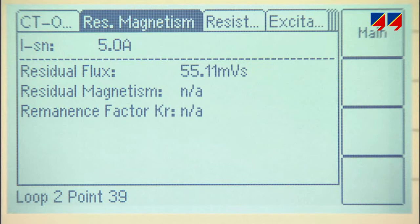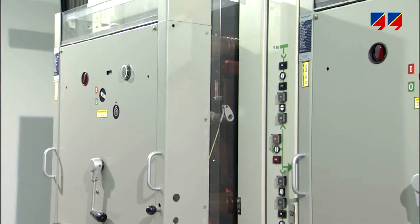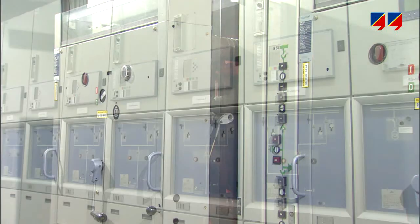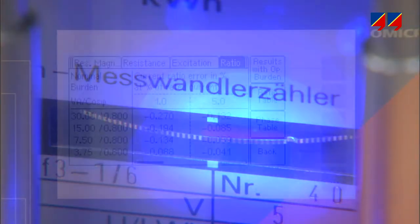Its remalizer function measures a CT core's magnetic remnants, helping to analyze unexpected protection behavior, such as incorrect tripping or non-tripping, due to CT saturation.